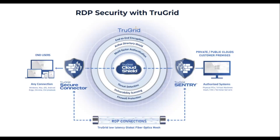Welcome to a technical overview of how TrueGrid works. This tutorial explains how TrueGrid secures Microsoft Remote Desktop Protocol, also known as RDP, without VPN or firewall exposure. It also explains how TrueGrid bypasses internet congestion to deliver low-latency connections for RDP sessions.